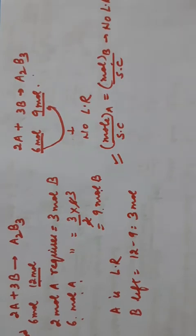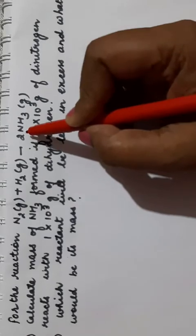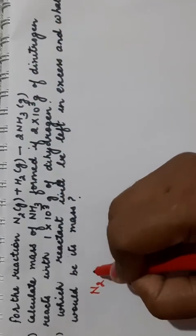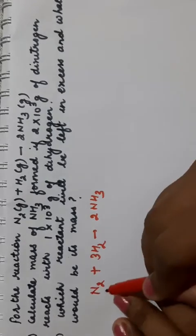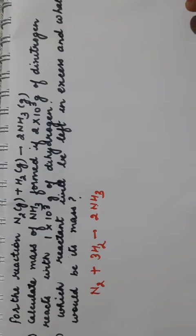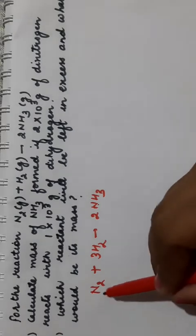We will now see an example from the NCERT book. The reaction given is N₂ + H₂ → 2NH₃, ammonia is formed. First we write the balanced equation: N₂ + 3H₂ → 2NH₃. All reactants and products are balanced - 2 nitrogen and 6 hydrogen on each side. We have to calculate the mass of ammonia formed if 2 × 10³ grams of dinitrogen reacts with 1 × 10³ grams of dihydrogen.